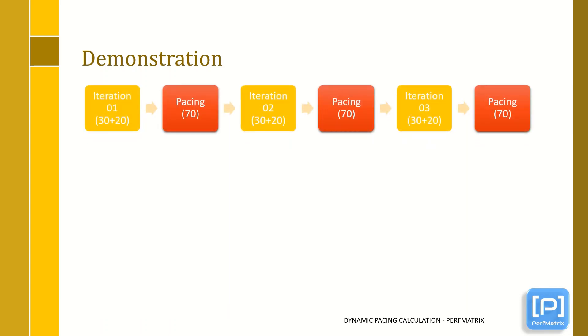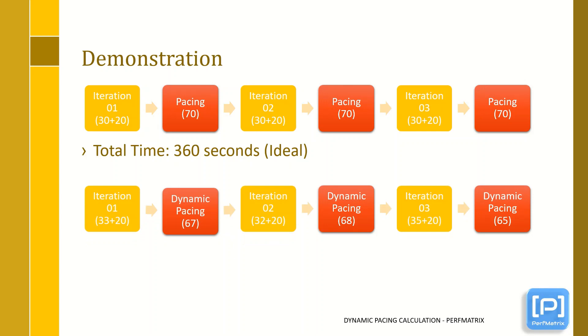So here you can see once the iteration along with think time is completed, then the performance testing tool waits for 70 seconds before starting the second iteration. In the ideal case, we can get the total execution time is 360 seconds. But practically response time varies due to various performance issues which is adjusted by dynamic pacing, and keeps the total execution time same which does not impact TPS or transactions per second.